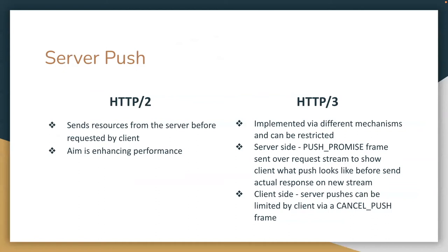I want to revisit server push and explain how it's different with QUIC and HTTP 3. Conventionally, the client had no say as to whether it was going to accept the push or not. But now the client does, because the server will ask via a push promise frame, which basically says, here's what we're going to send you. The client can decide whether it wants it or not, and if it doesn't, it can send back a cancel push telling the server not to send it.